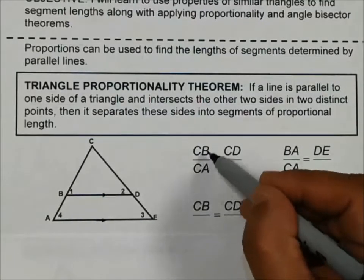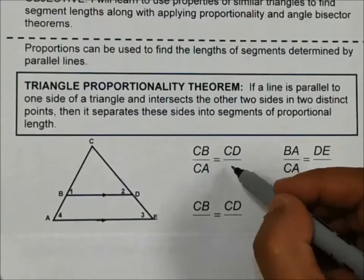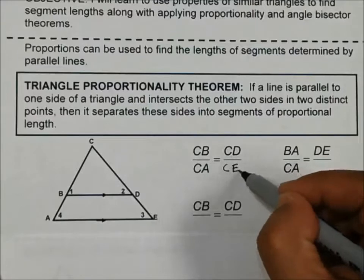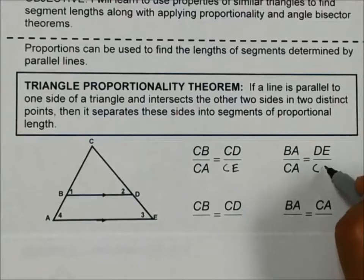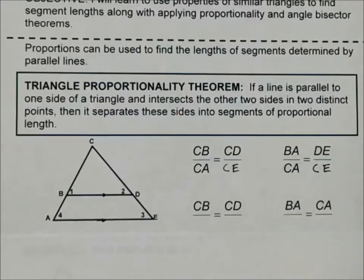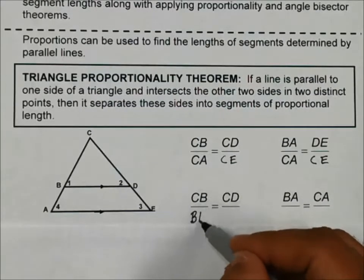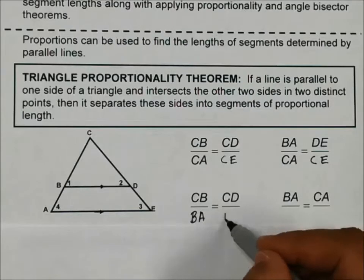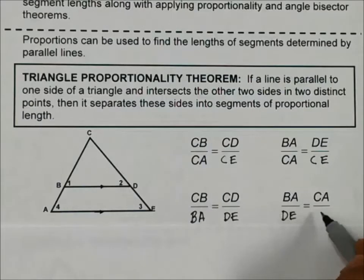So CB, the ratio of CB over CA is going to be congruent to the ratio of CD over CE. And then we have BA over CA, that's going to be equal to DE over CE. And then the next set, if I have CB over BA, that's going to be equal to CD over DE.